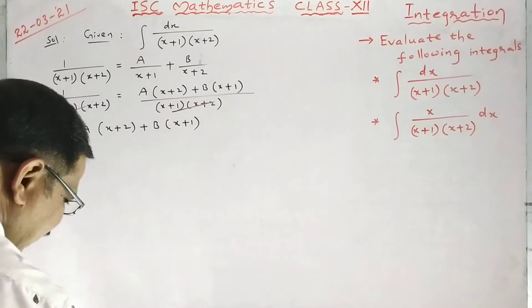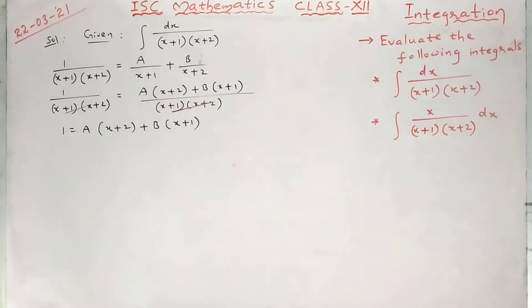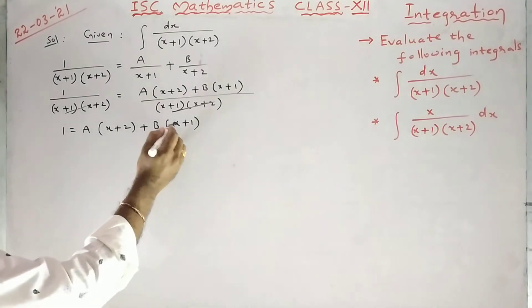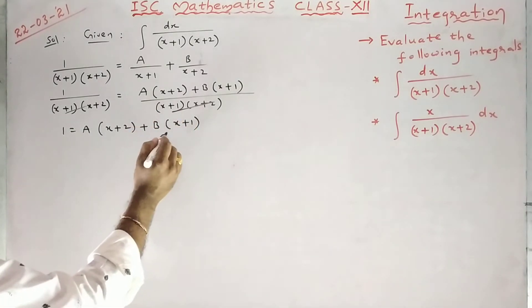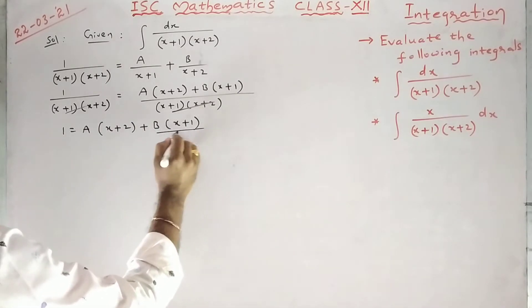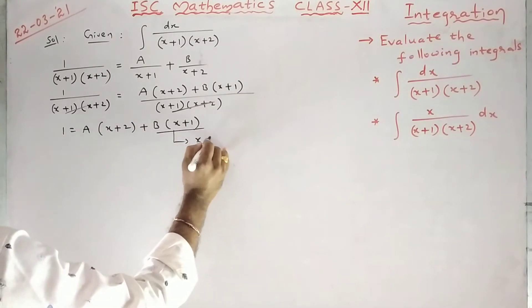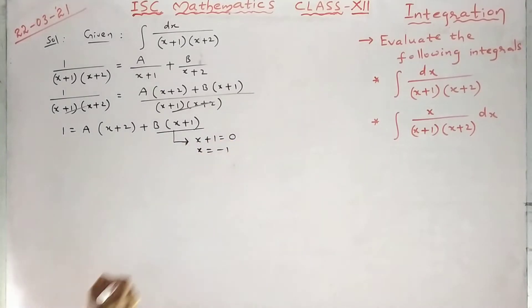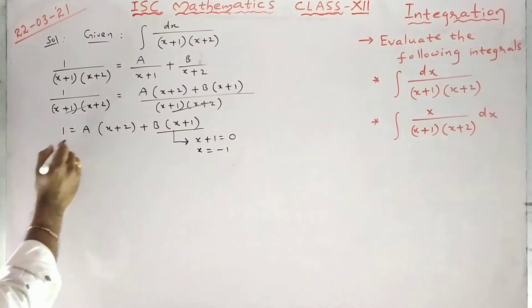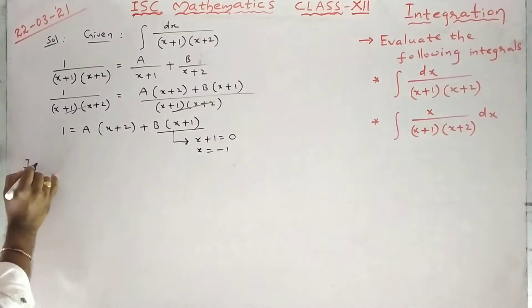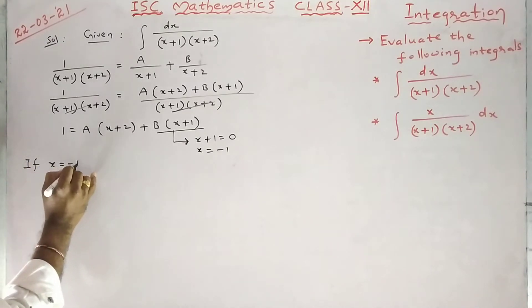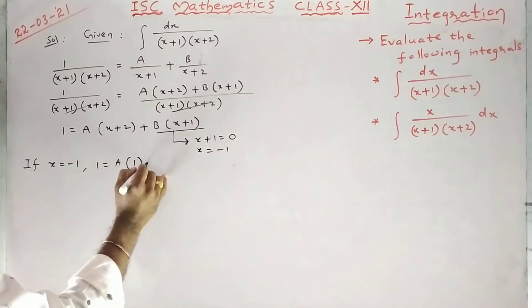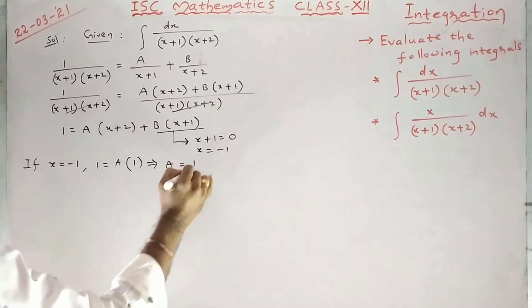Now I have to find the values of A and B. To get the value of A, I have to cancel B. How do you cancel B? We make x+1 equal to 0, so x equals minus 1. If x = −1, we get 1 = A(−1+2) = A×1, so A = 1.